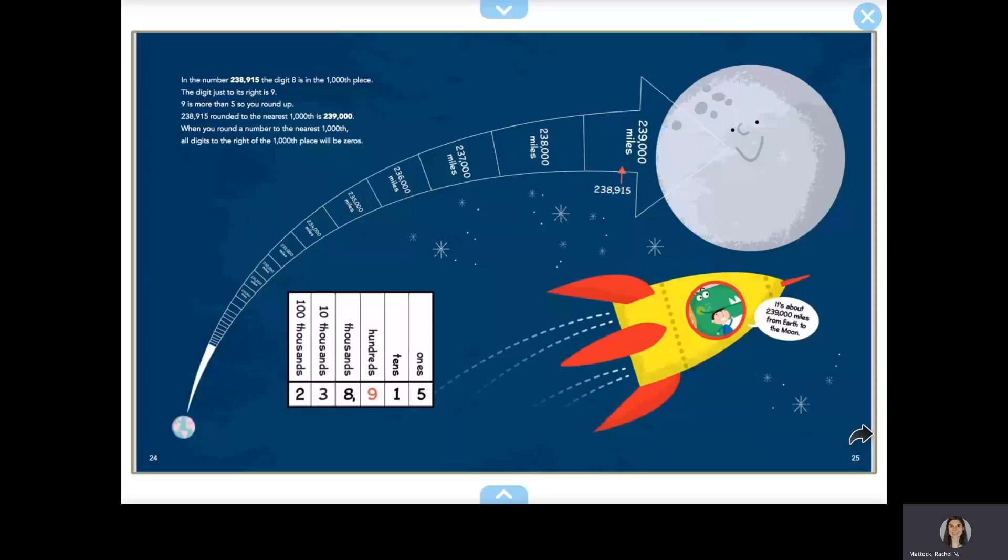In the number 238,915, the digit 8 is in the thousands place. The digit just to its right is 9. 9 is more than 5, so you round up. 238,915, rounded to the nearest thousand, is 239,000.